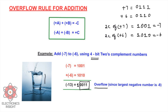Just as a glass can only hold a certain amount of water before overflowing, a register can only hold 4-bit data. Here we have a 5-bit result, indicating the register cannot hold this value — that is an overflow. The rule says: when both numbers have the same sign, overflow occurs when the result has a different sign.